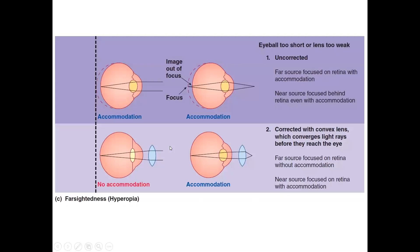In hyperopia, the eyeball is either too short or the lens is too weak and not flexible. The far light source focuses on the retina with accommodation, while the near light source focuses behind the retina even with accommodation, resulting in a blurry, out-of-focus image.